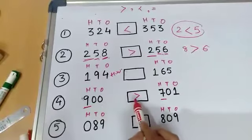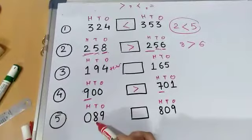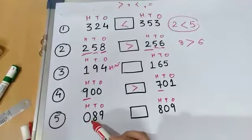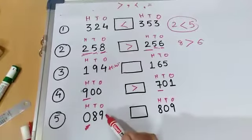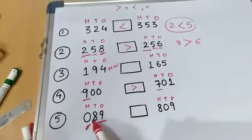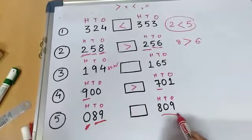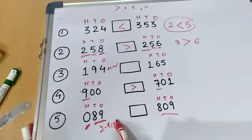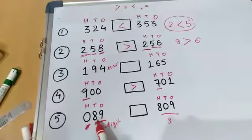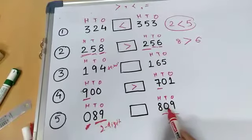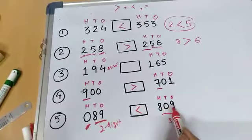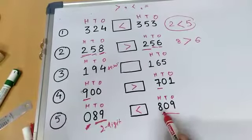Now look over here, this is 089. Is it a 3 digit number? No, kyunki 0 tens ke pehle hai aur is 0 ka koi sense nahin hota. Hamne jab 3 digit number padhe the tab padha tha na. So this number is only 89, there is no 100. So 89 bada hoga ya 809? Hamesha two digit number se three digit number bada hota hai. Ismein number of digit kya hai? Zyada hai aur ismein number of digits kam hai. To yeh chota hua aur yeh bada hua. So this number is greater, so mouth will open towards this number.